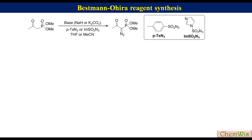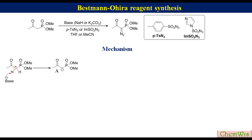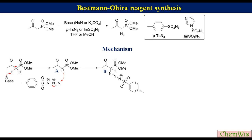The mechanism involves abstraction of the active methylene proton from dimethyl 2-oxopropyl phosphonate to produce anion A, which undergoes nucleophilic addition with para-toluenesulfonyl azide to produce species B.